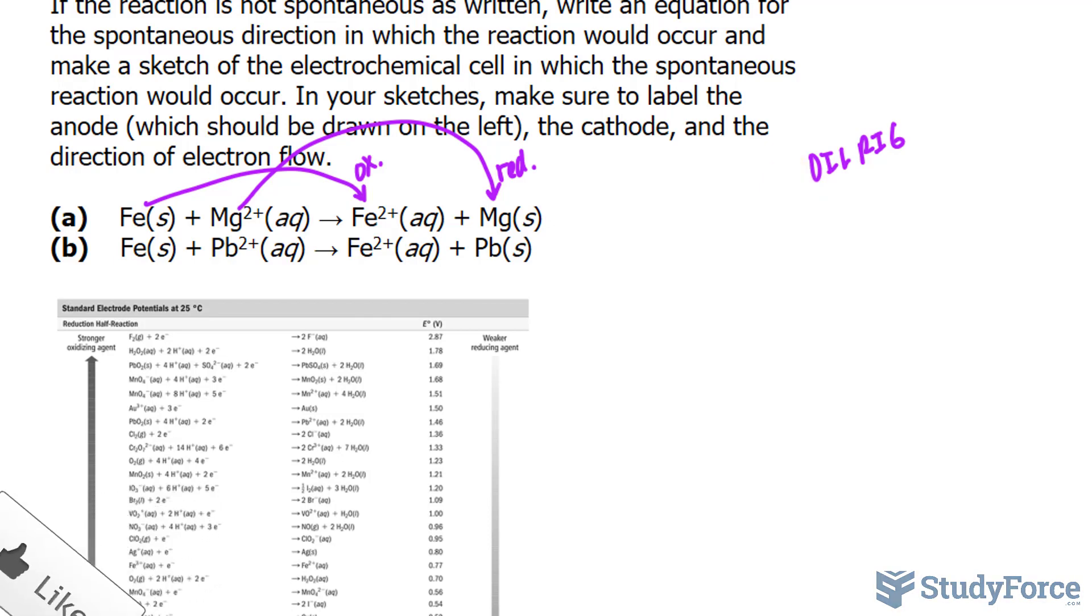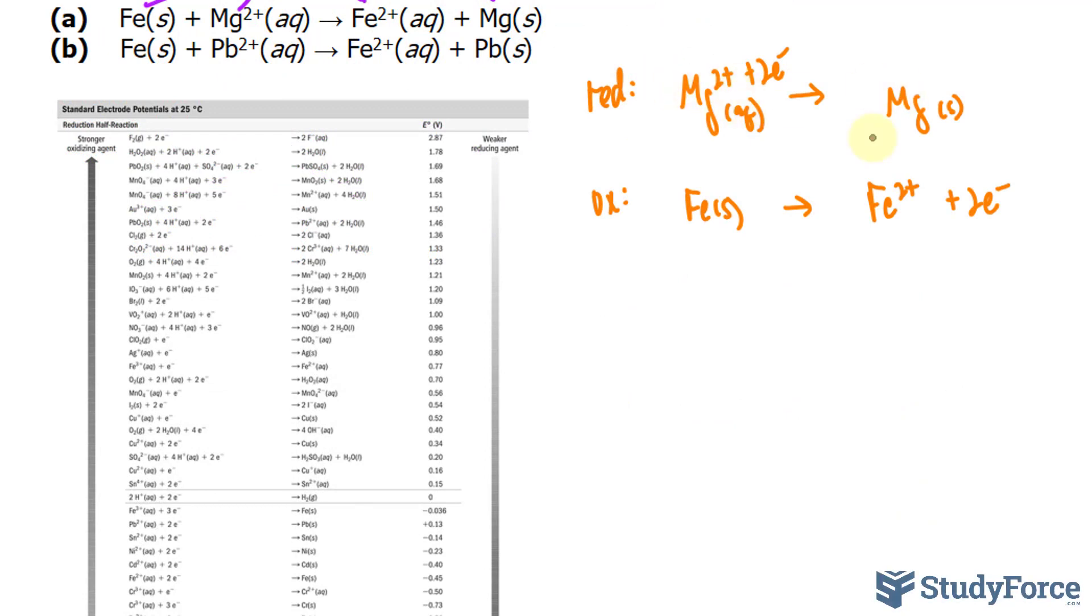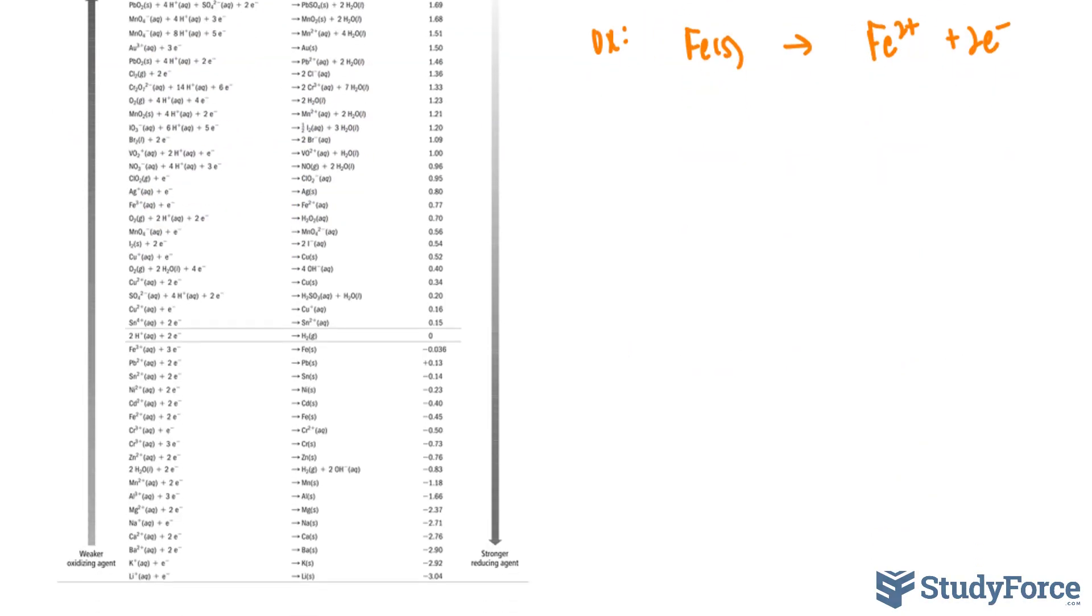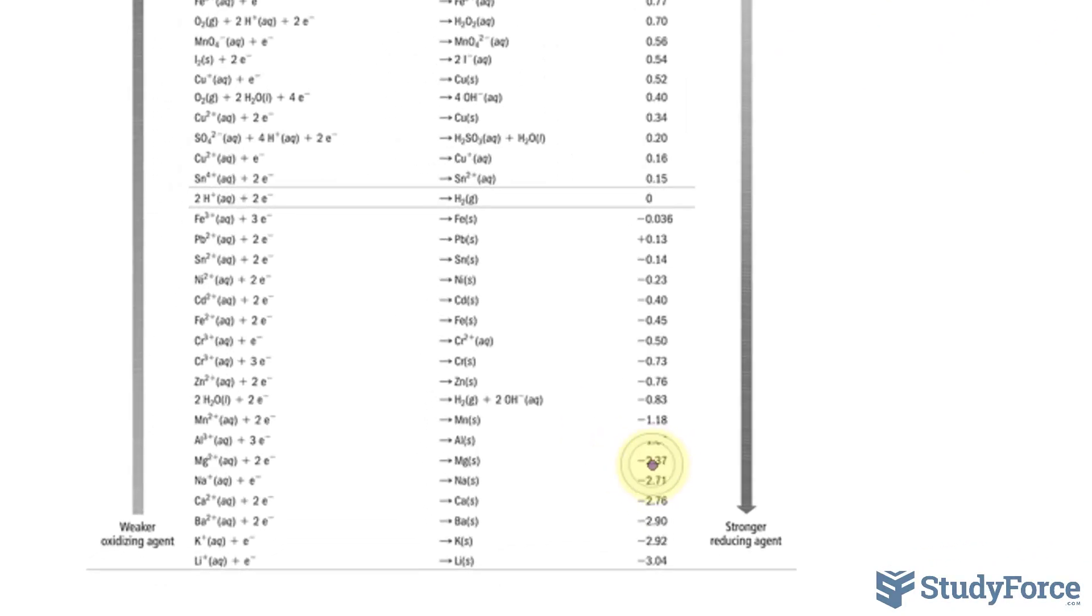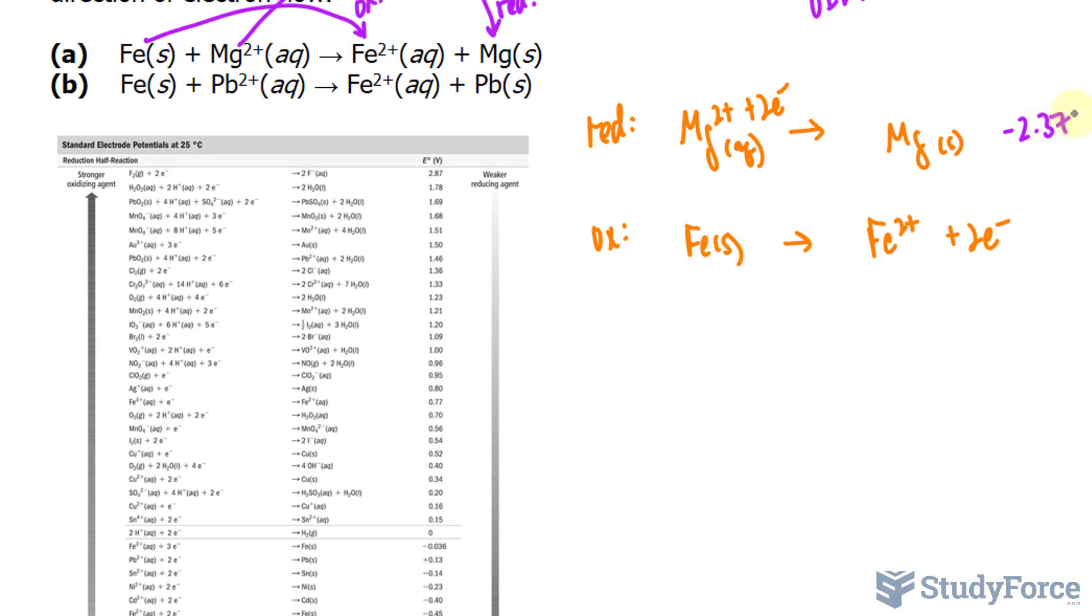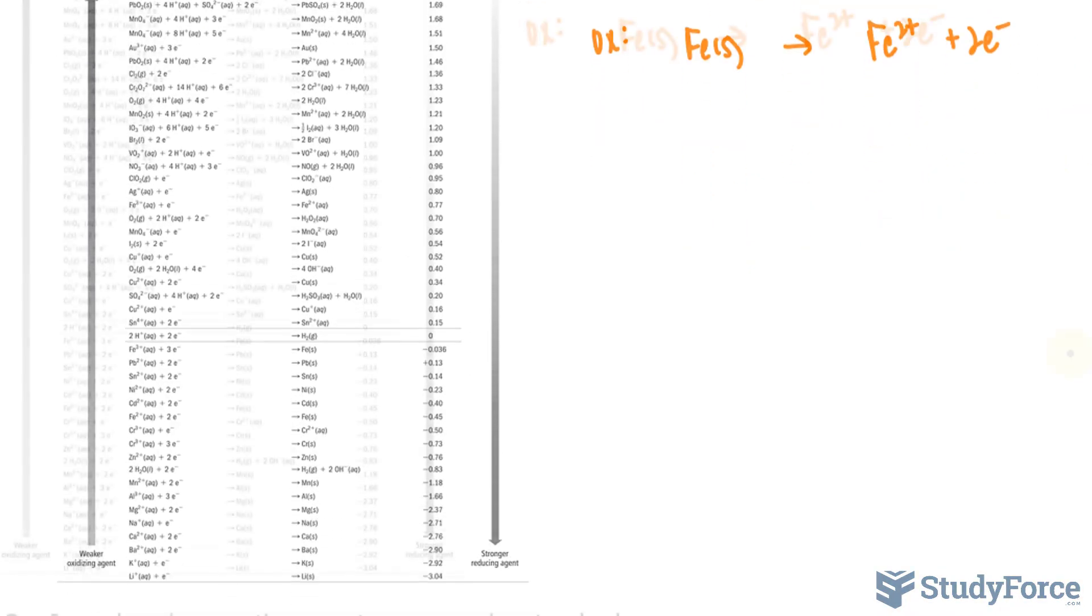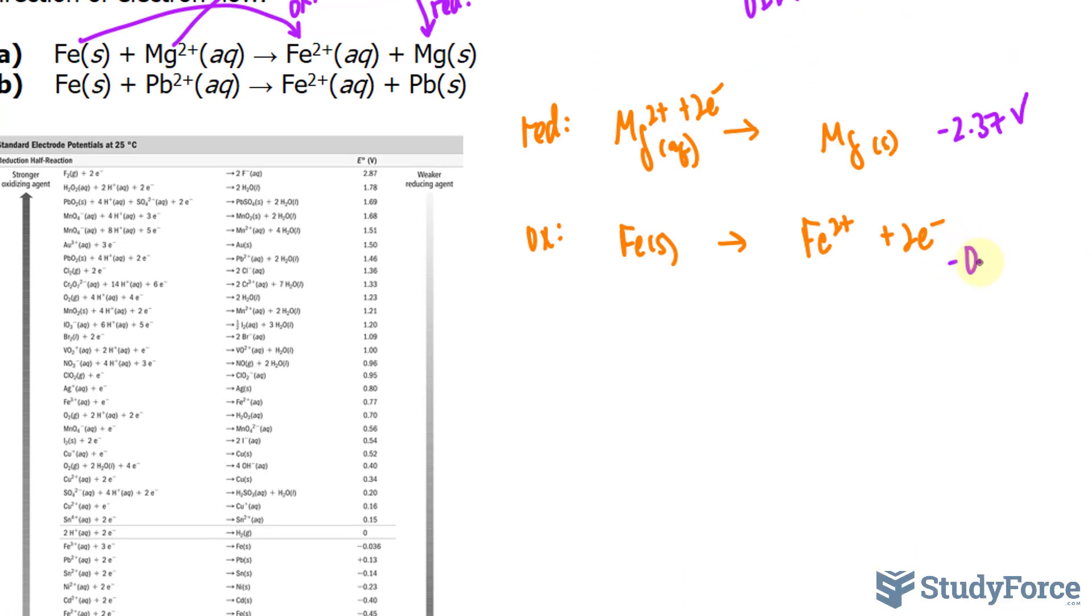The next thing that I want to do is find out what their standard electrode potentials are for these reactions. So the reduction reaction is magnesium 2+ forming magnesium solid, and to balance this out, I'll write down two electrons here. And the oxidation is iron solid forming iron 2+, and we'll write down two electrons. We're going to find the standard electrode potentials using this chart. Magnesium has an electrode potential of negative 2.37 volts, and for the other one, it's negative 0.45 volts.